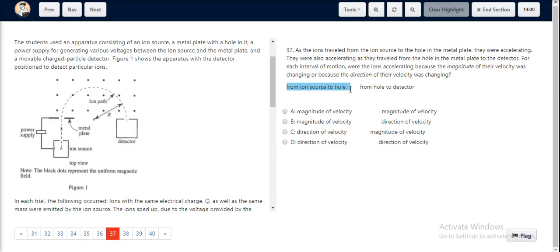From iron source to hole, the magnitude of velocity is changing since there is no change in direction. A single straight line. However, from hole to detector, since it follows a circular path, the direction of velocity changes.